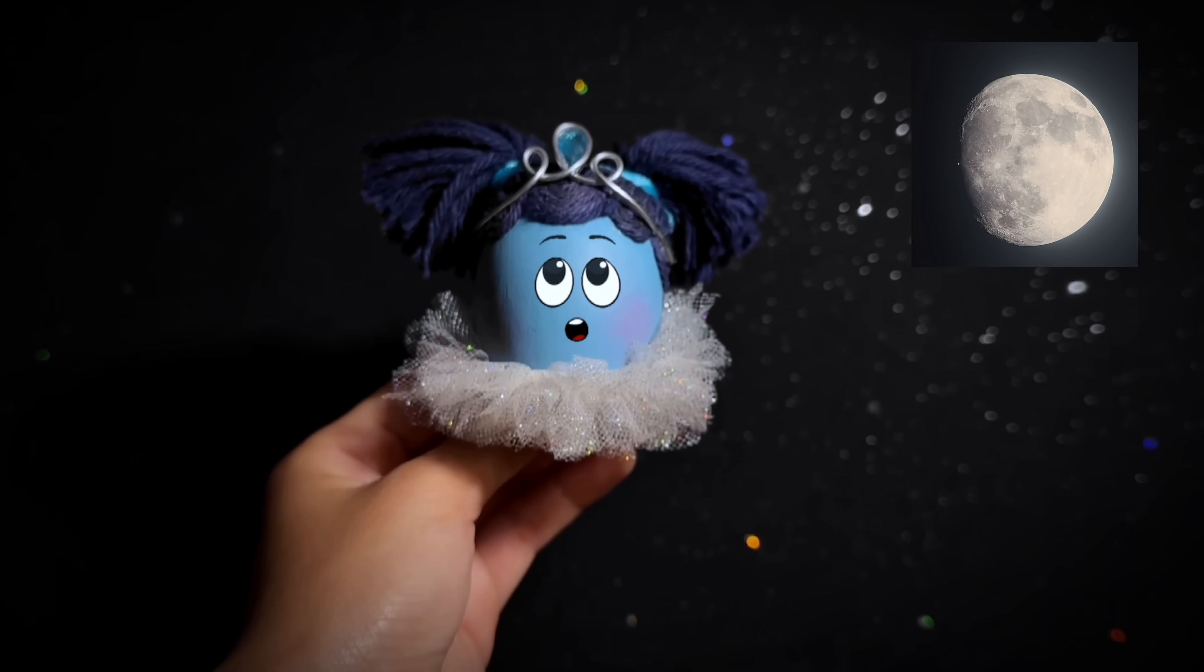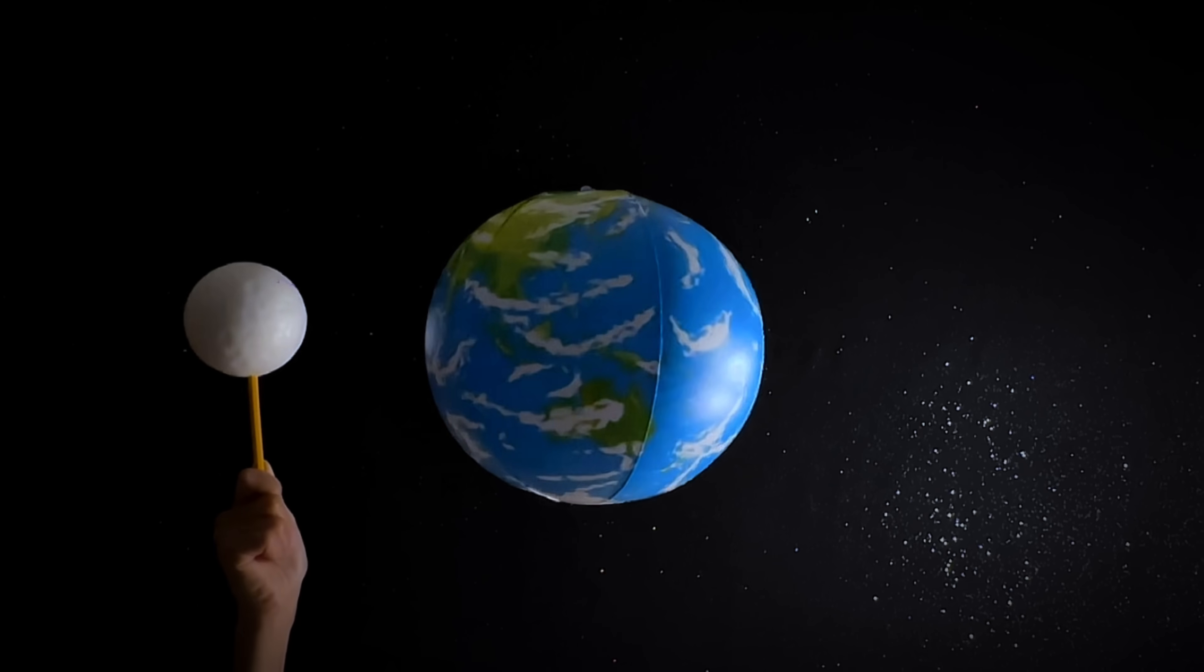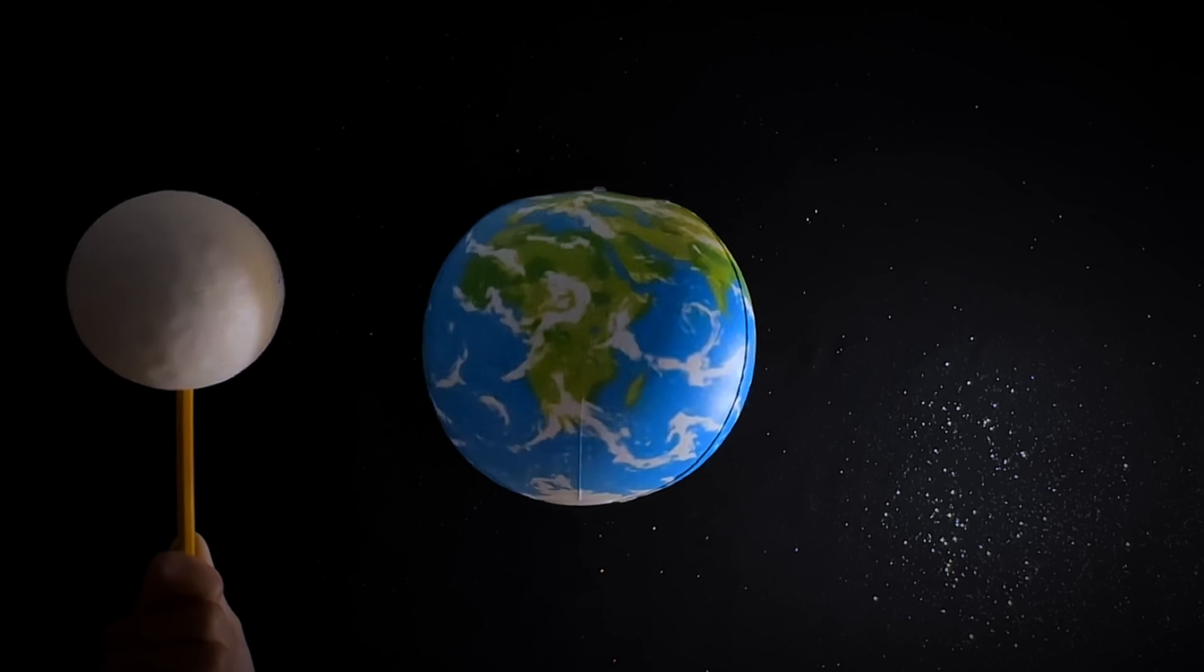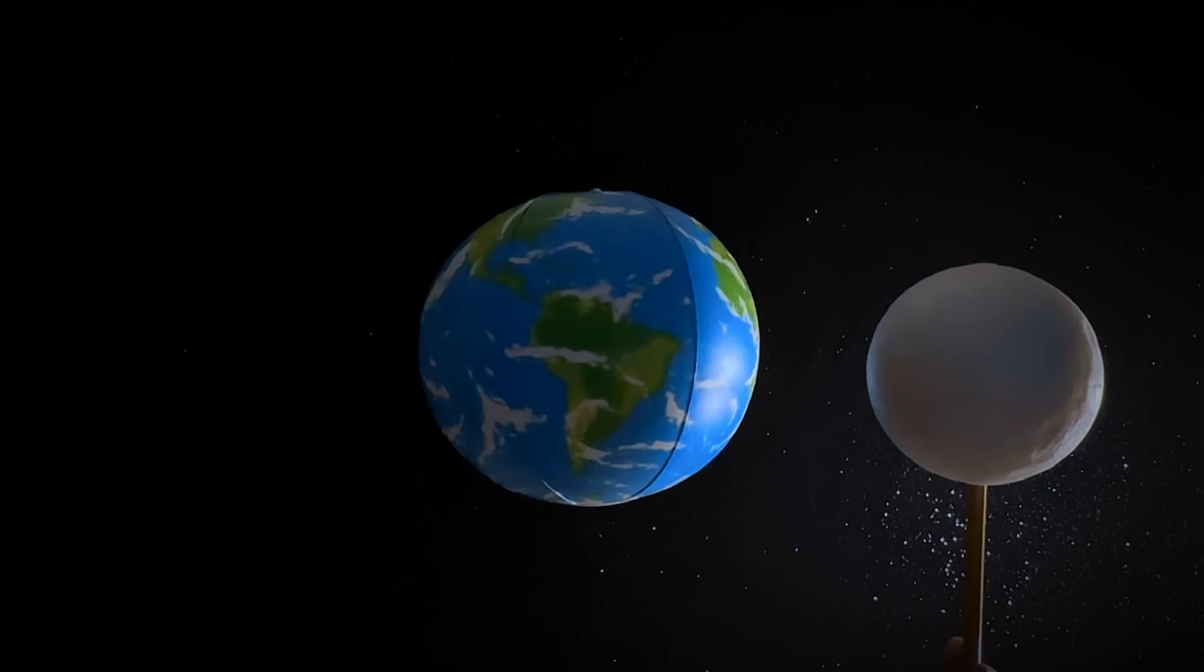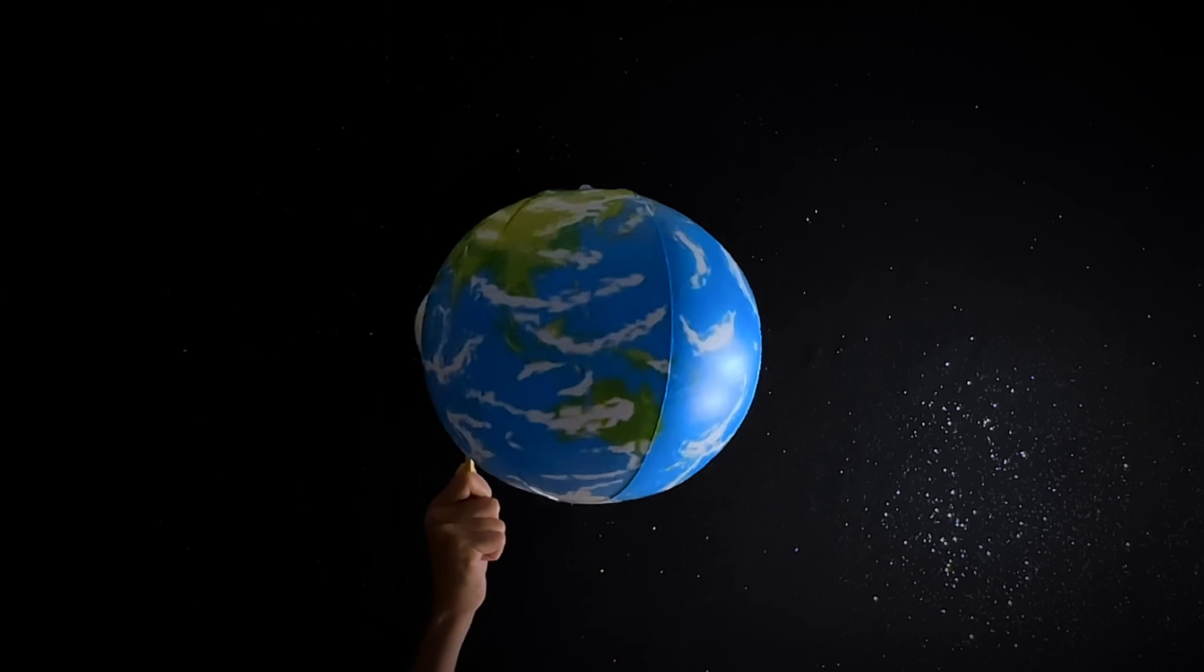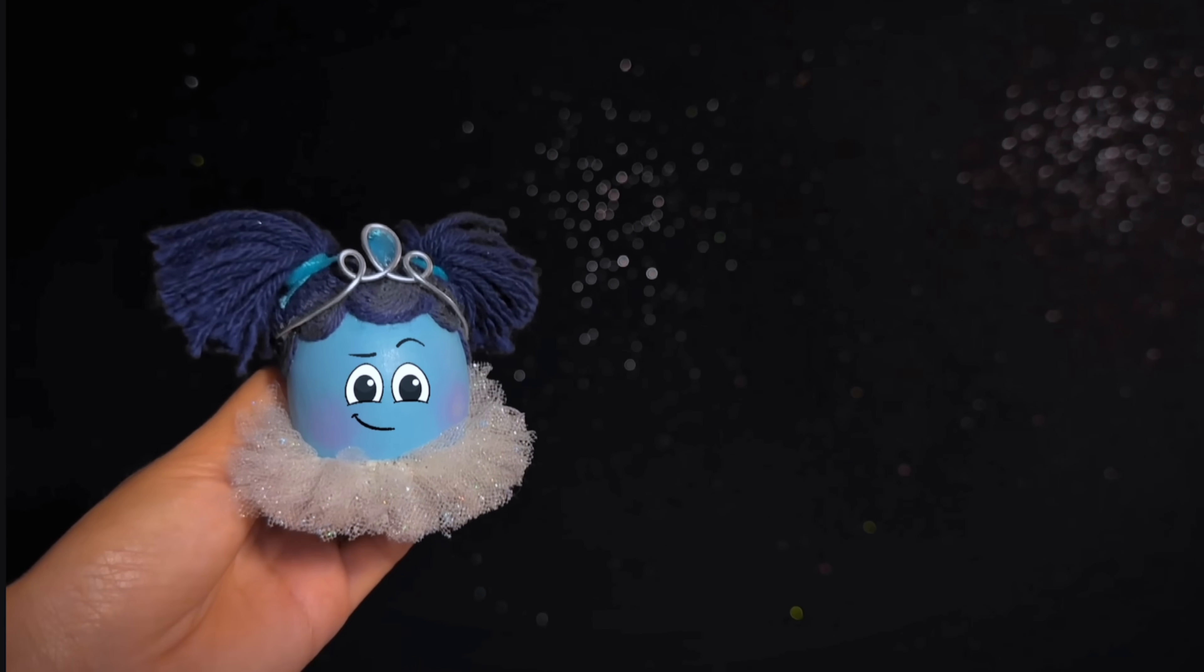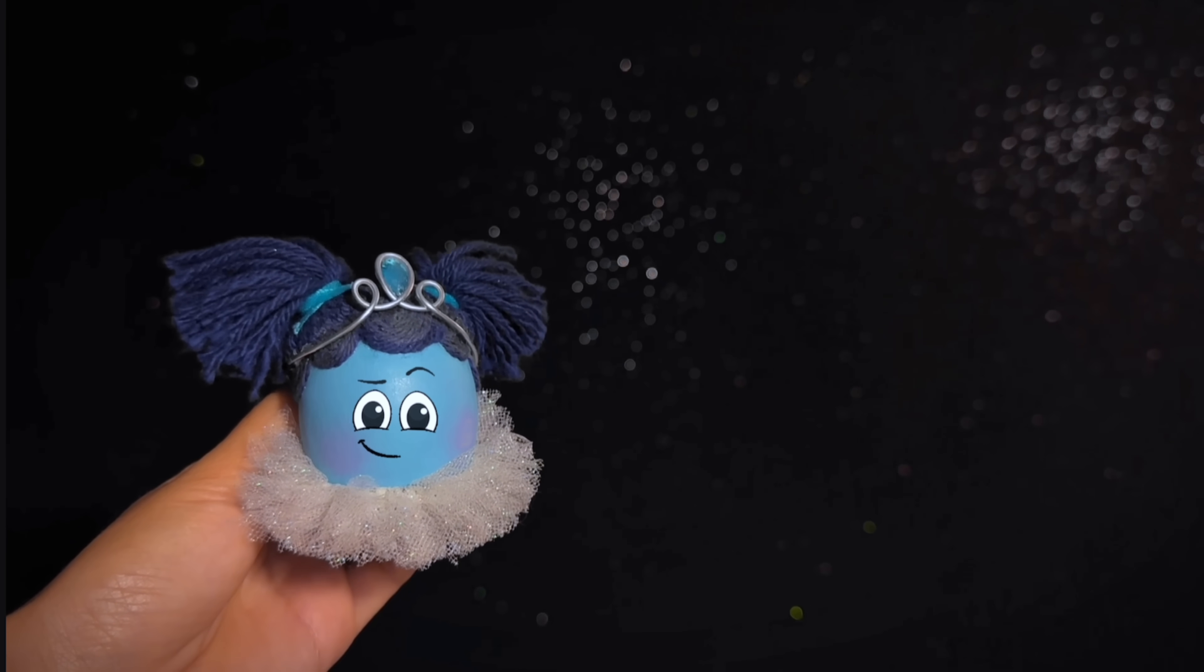Have you ever noticed that the moon changes shapes? That's because it travels around Earth in an orbit. An orbit is like a train track in space. Let's play a fun game with Robin to understand the moon's different shapes.